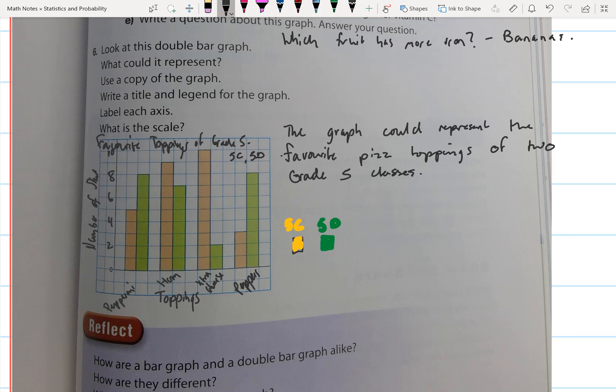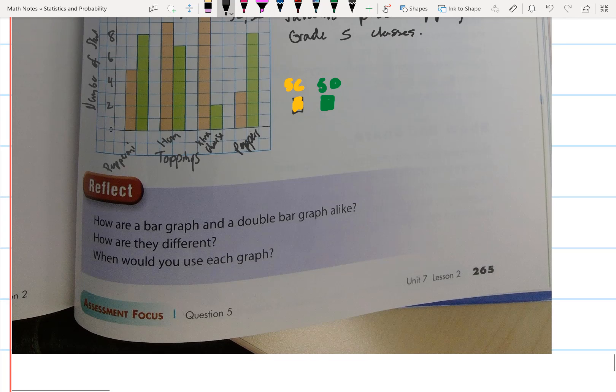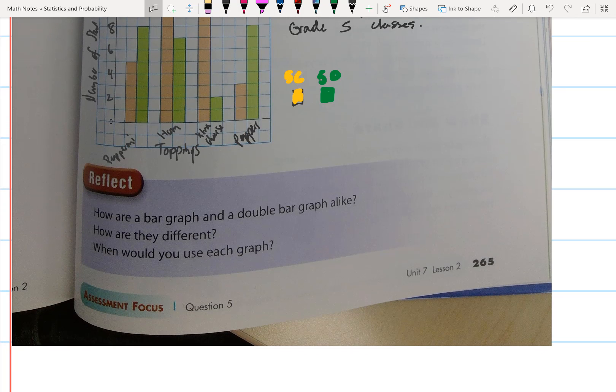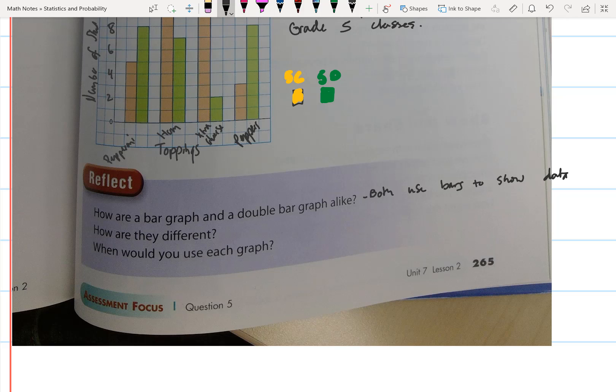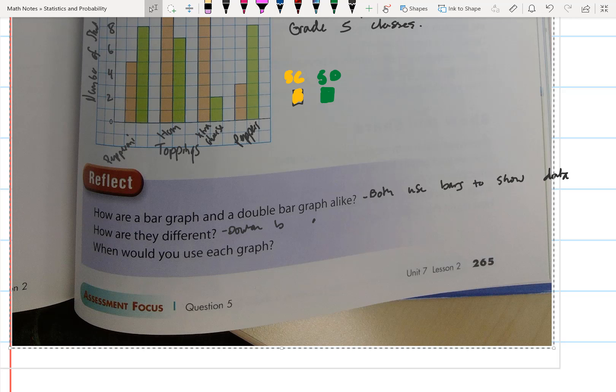All right, moving on to the reflect question. How are a bar graph and double bar graph alike? Well, they both use bars to show data. Another way that they are alike is they both have titles, they both have horizontal and vertical axis titles, and they both have scale.